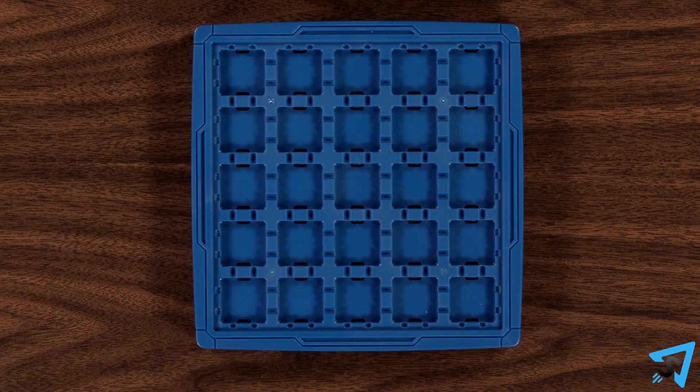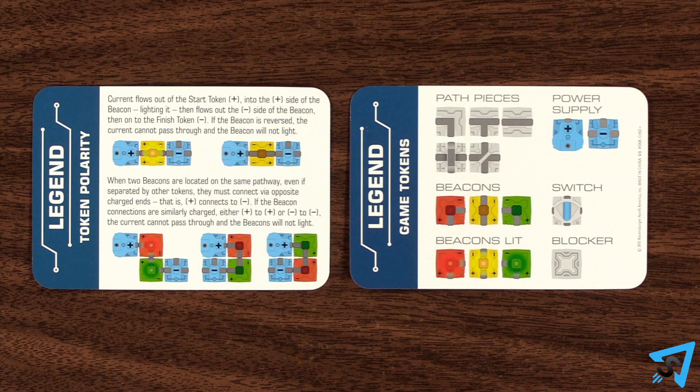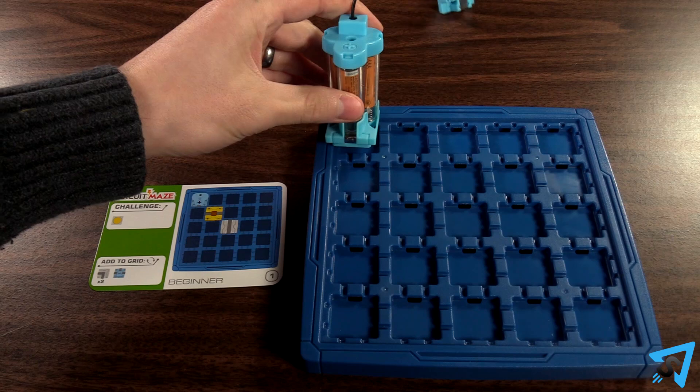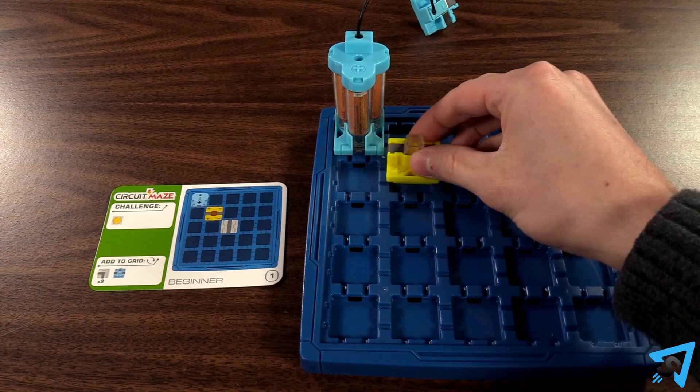Lay out the board and pick a challenge card. There are two legend cards that can be used to reference what the symbols mean. Set up the tokens on the board as indicated by the card.